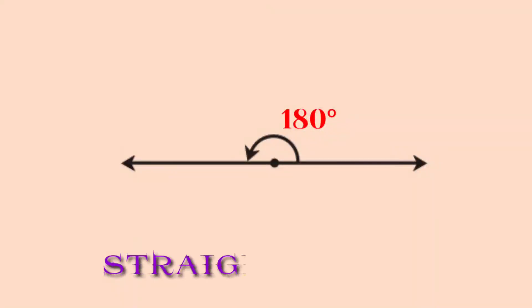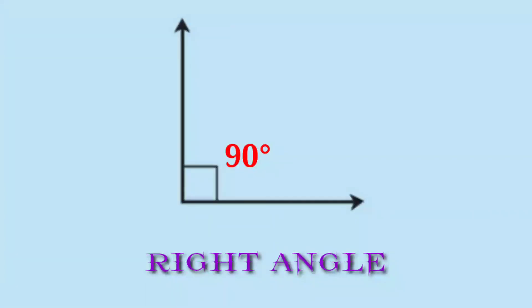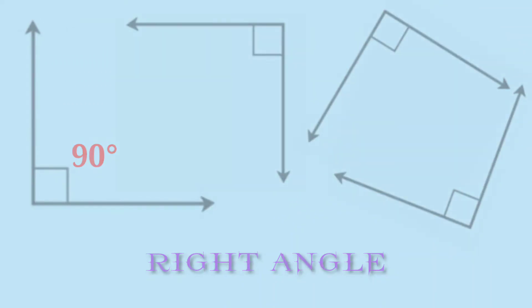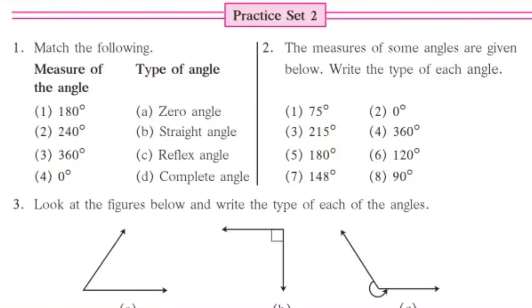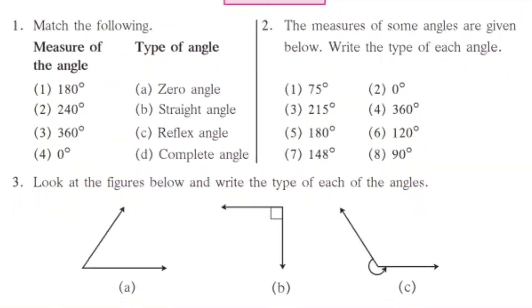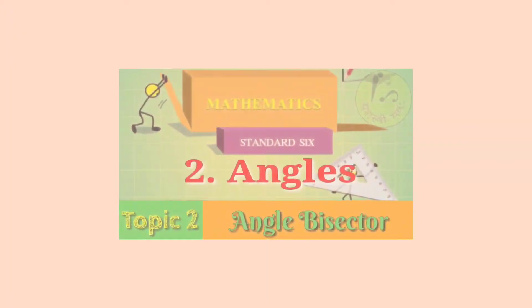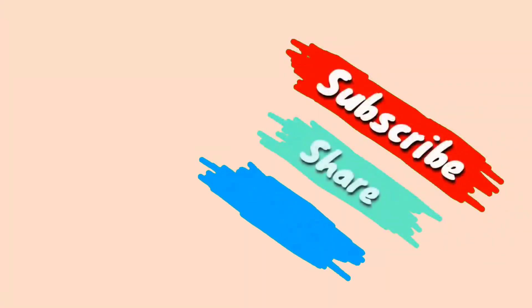Here we have a straight angle and a 90-degree angle. One line is vertical and one is horizontal, and the angle between them is a right angle. The right angle is 90 degrees. Continue studying and practicing.